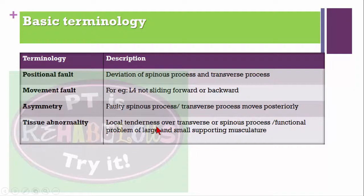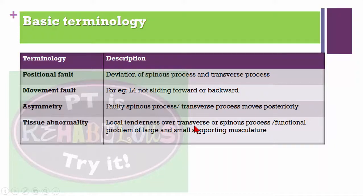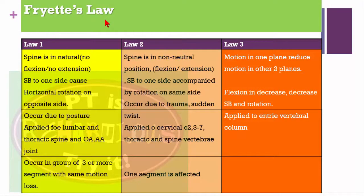Asymmetry refers to a faulty spinous process or transverse process that moves posteriorly. Tissue abnormality refers to the patient complaining of local tenderness over the transverse or spinous process, or a functional problem of large or small supporting musculature. For example, if a patient has local tenderness over T3-T4 transverse or spinous process and some muscular problem, that is called tissue abnormality.